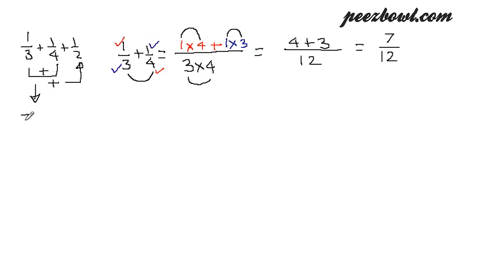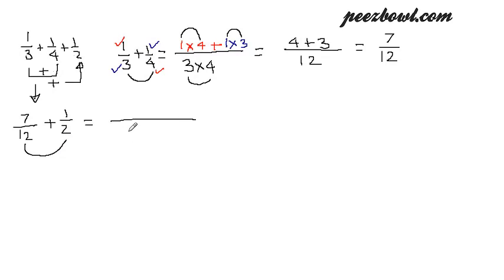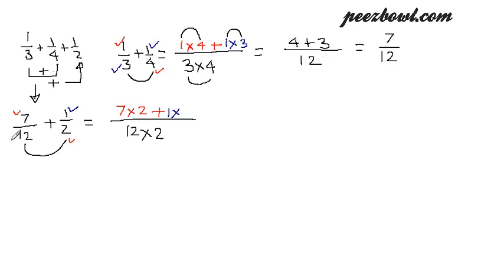So 7/12 is the result of the first two fractions added together. Now I am going to add 1/2, which is the last fraction. I will keep the process the same — multiplying 12 and 2 to get the denominator, that is 12 multiplied by 2. For the numerator, I multiply the numerator of the first fraction (7) with the denominator of the second fraction (2), and multiply the numerator of the second fraction (1) with the denominator of the first fraction (12).